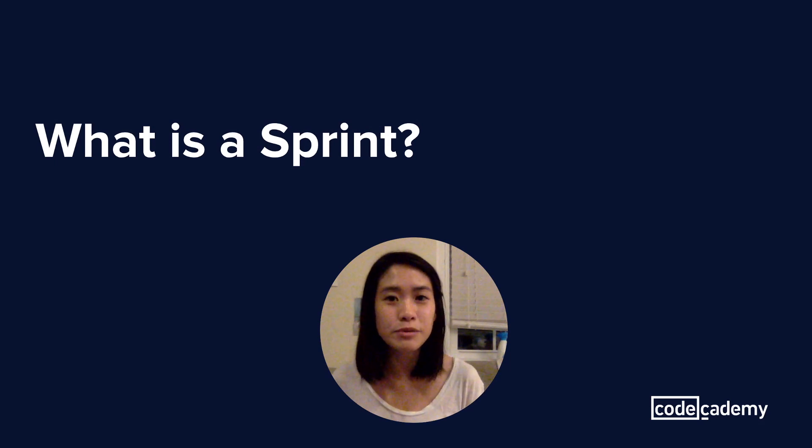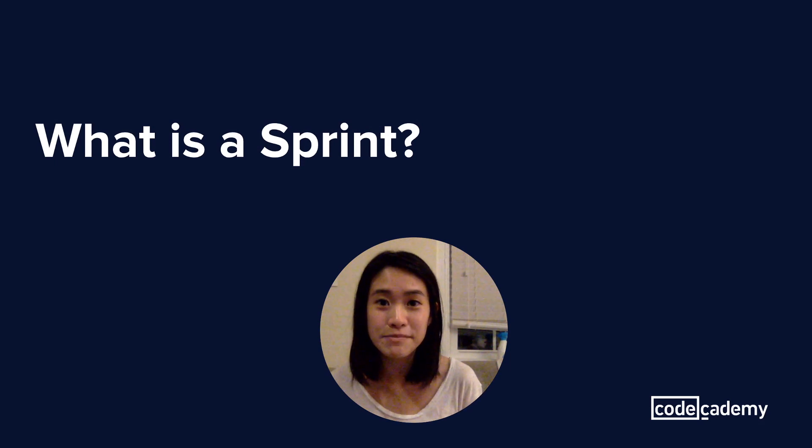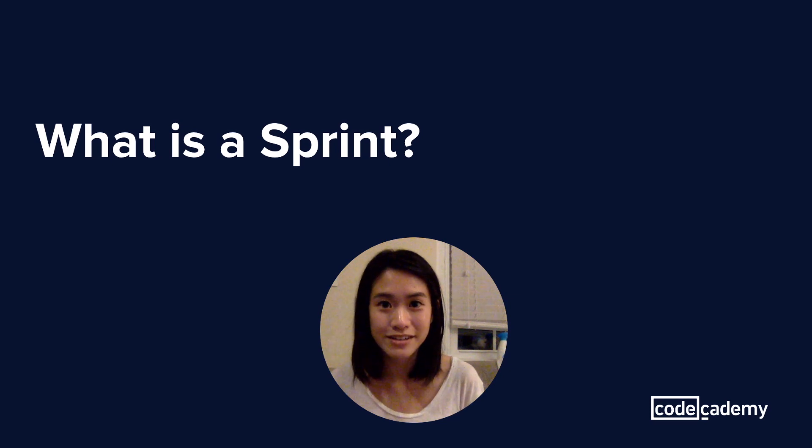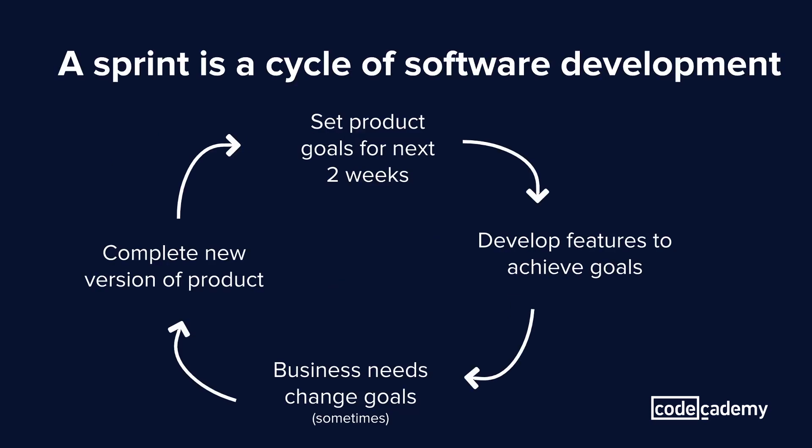Simply put, a sprint is a period of time that a team has to complete a set amount of work. In the case here, the development cycle is two weeks. Generally, that amount of time can vary from team to team, and it could be as long as a month or as short as a week.